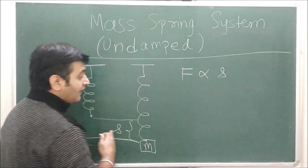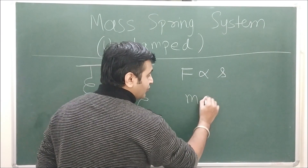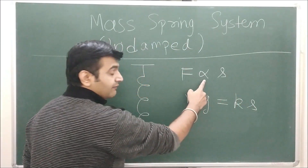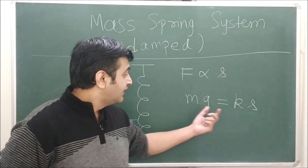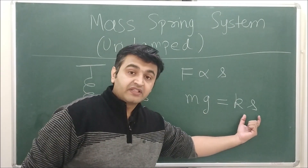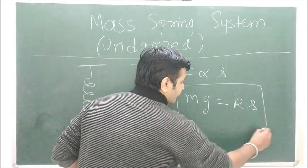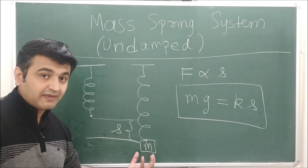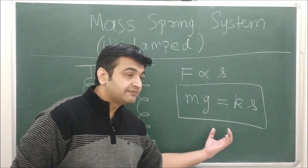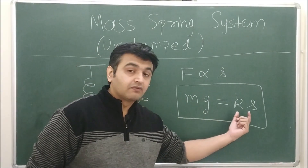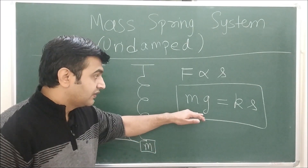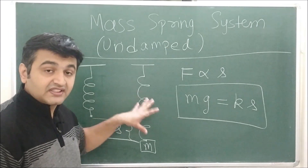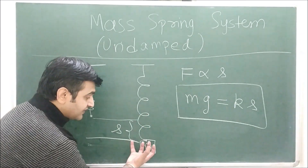By Hooke's law, the restoring force is proportional to the displacement s. Removing the proportionality sign gives force equal to ks. So the gravitational force equals the restoring force: mg = ks. This equation represents the equilibrium position both physically and mathematically.